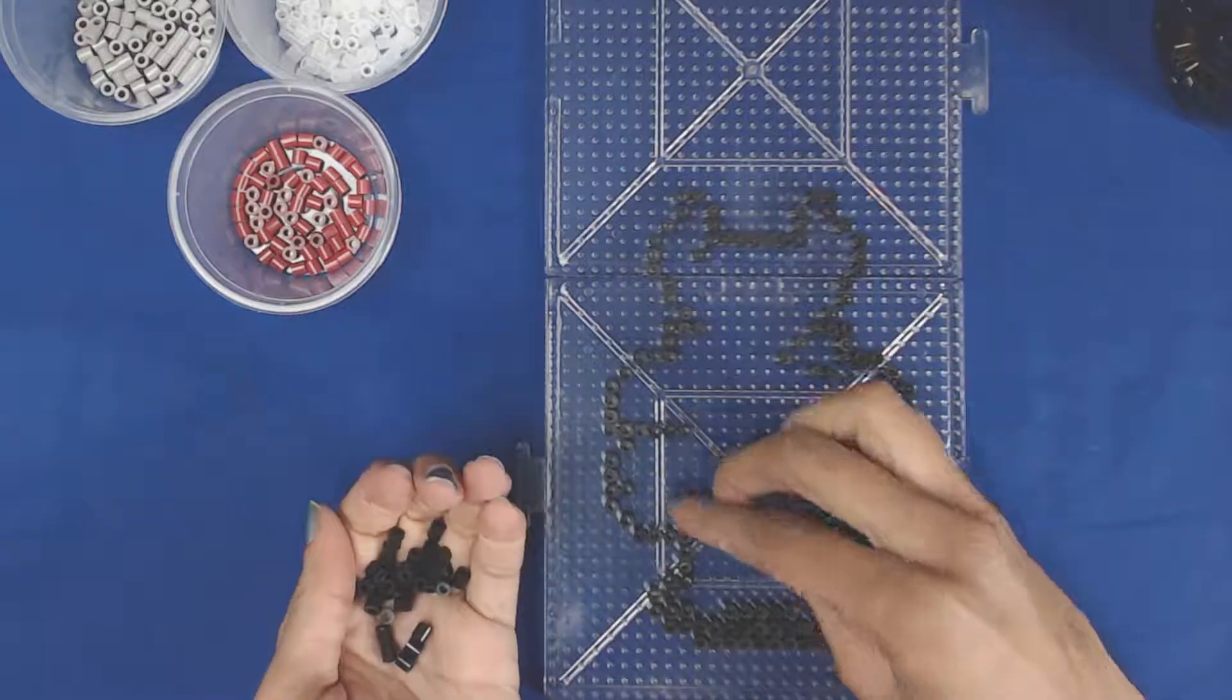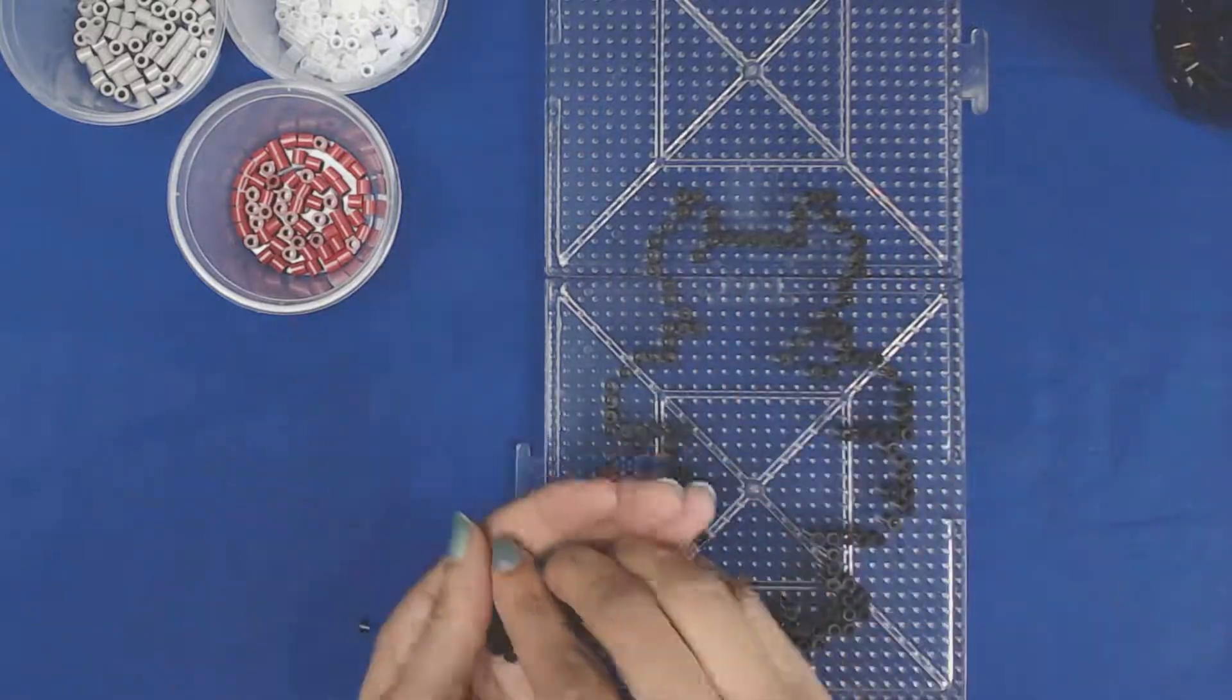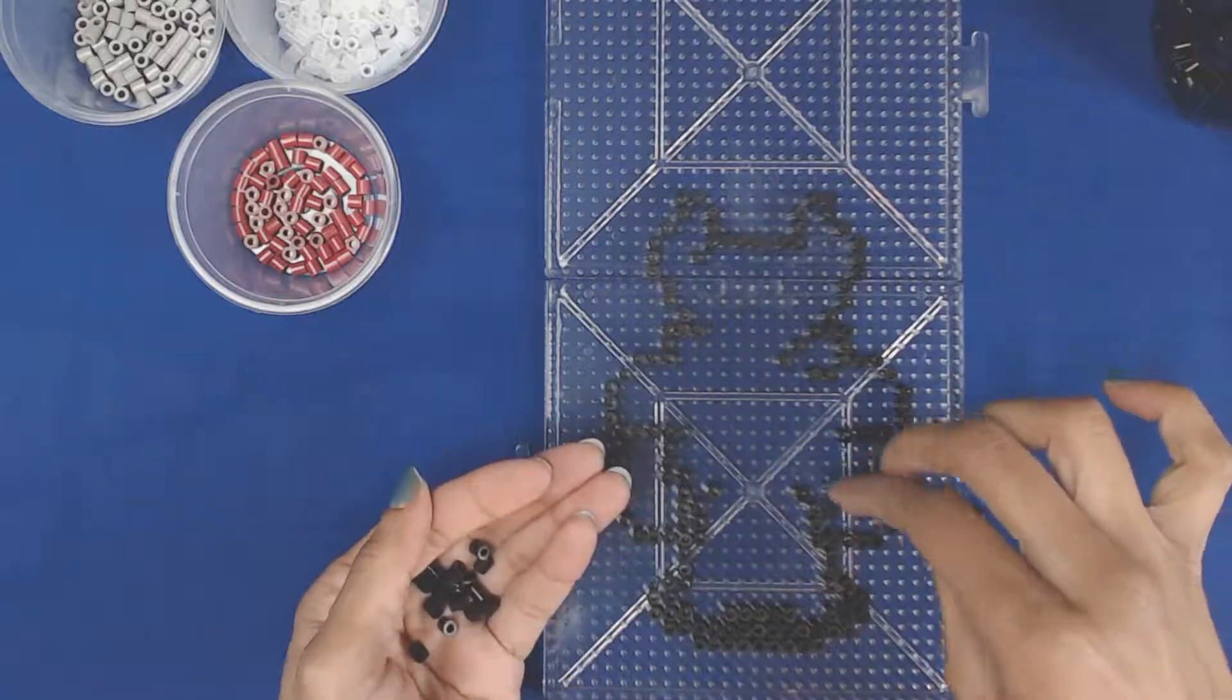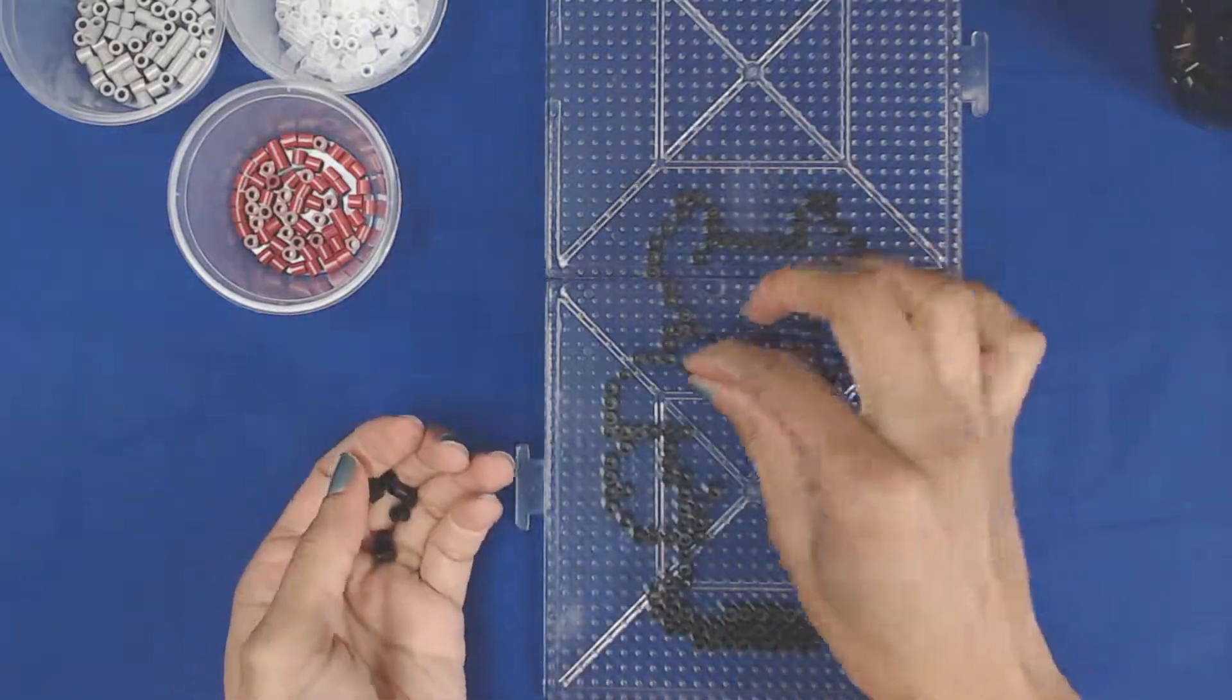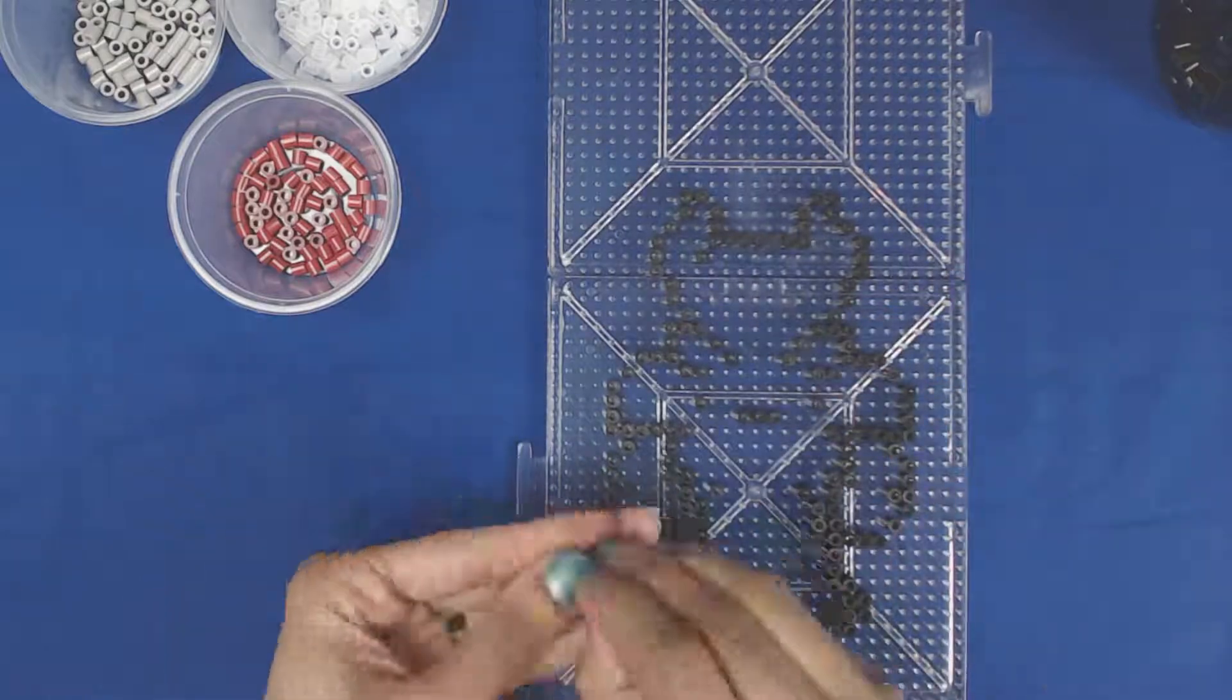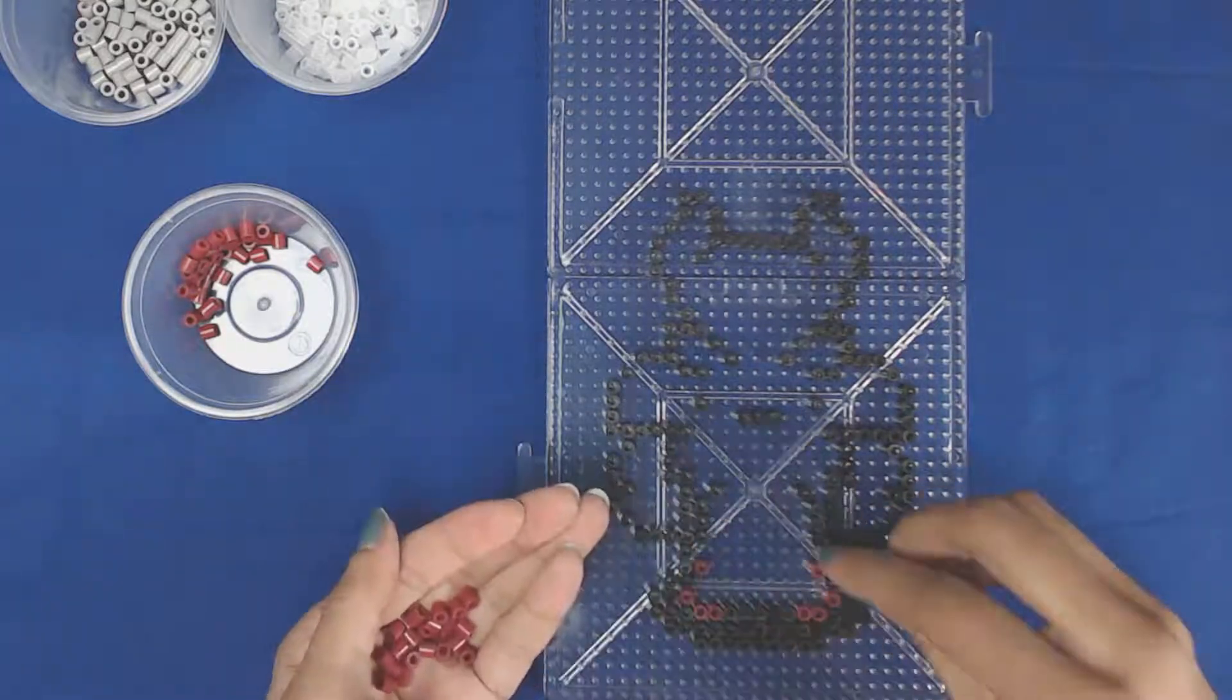I mean, sorry, but I gotta be honest, Perler beads and Hama seem to be the most consistent in form when you melt them. They seem to come out the best in my eyes, of course. So whenever I'm doing any kind of fused bead project where I have to actually iron it, I tend to use Perler or Hama.